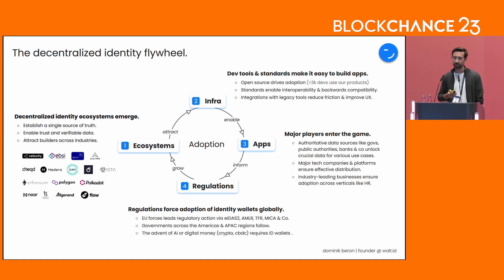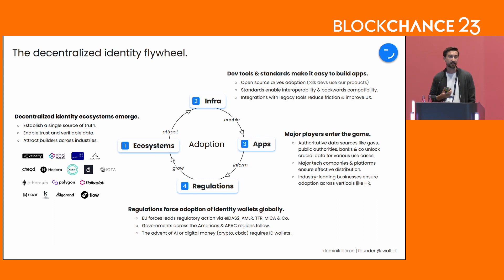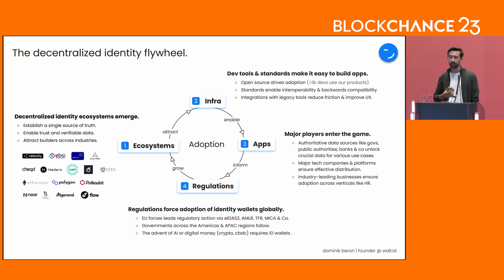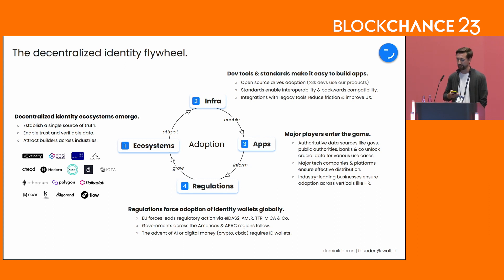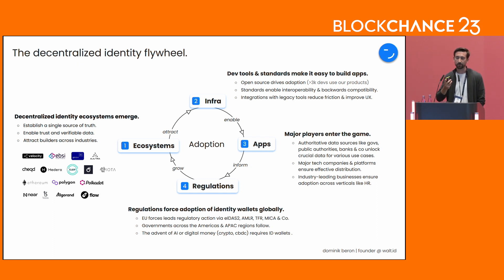Once these apps are being developed, we come to a final lever: regulations. And regulations, in the case of identity, are really good for adoption because what they do is not only incentivize the adoption of decentralized identity, but in many cases actually force it. Especially Europe is spearheading governments and regulators globally by providing regulations like the EIDIS2 regulations, which forces decentralized identity wallets in public and private sector, but also regulations related to anti-money laundering and crypto, which can only be complied with if we have identity wallets that allow us to share data freely and verifiably. These regulations in turn drive forward the flywheel — they further grow ecosystems, attract more builders, and with this also more applications.